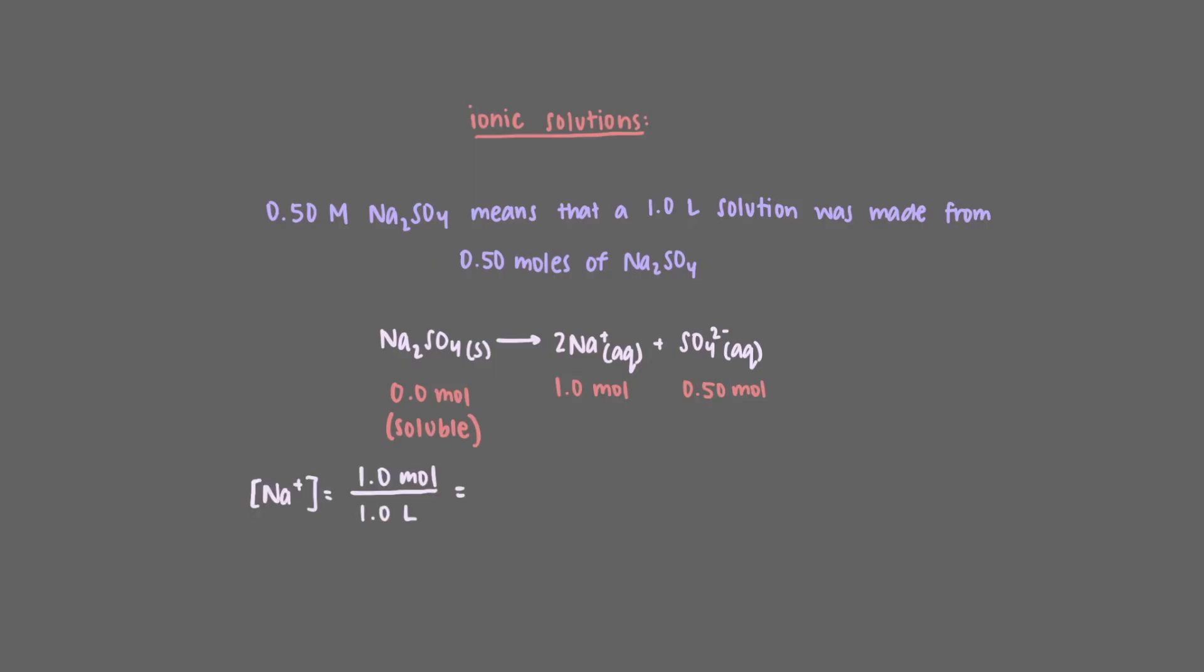Finally, a quick note about ionic solutions. You will see concentrations of ionic solutions written like this. But that's a bit misleading. Really, what this means is that a 1.0 L solution was made from 0.50 moles of sodium sulfate. But that really means that there would be 1.0 moles of sodium ions, 0.50 moles of sulfate ions, and absolutely no undissociated sodium sulfate in the solution since sodium salts are soluble. So the molar concentration of sodium ions in the solution is 1.0 molar, and the concentration of sulfate ions is 0.50 molar.